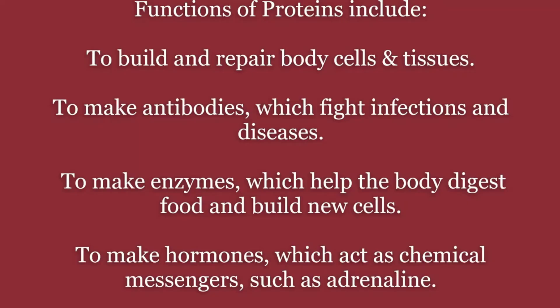The body uses protein from food to help growth and to repair body cells and tissues — for instance, if we have an injury. It is also used to make antibodies which fight infections and diseases, and it can be used as an energy source. Protein is also used to make enzymes which help the body digest food and build new cells, and to make hormones which act as chemical messengers, such as adrenaline.